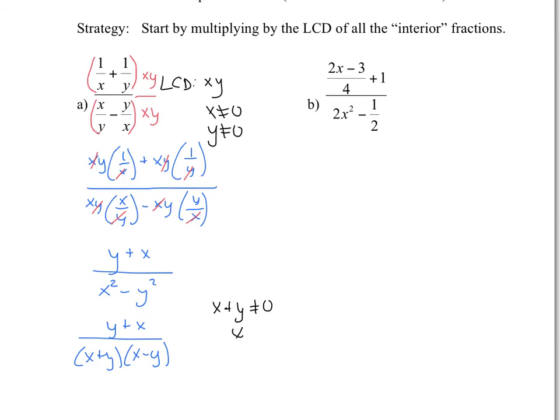x plus y cannot equal 0, therefore x cannot equal negative y, and also x minus y cannot equal 0, which means x cannot equal y. So if x and y are equal to each other, these created other non-permissible values.